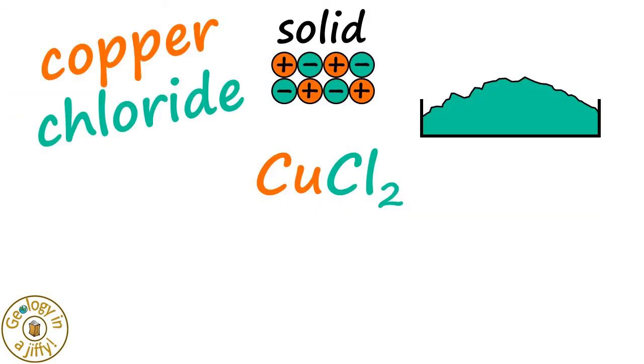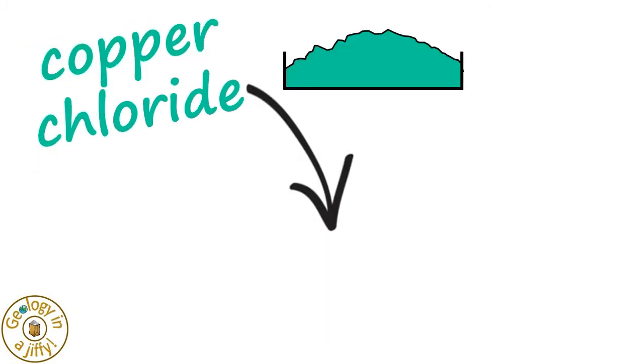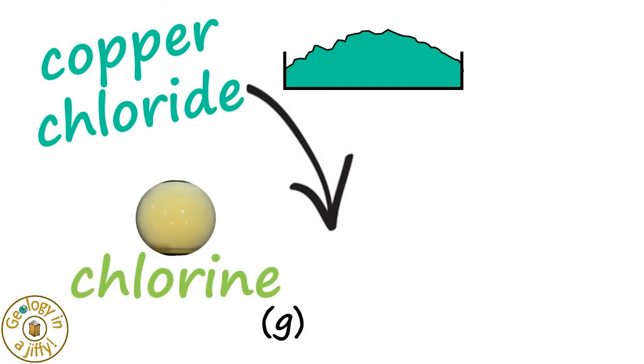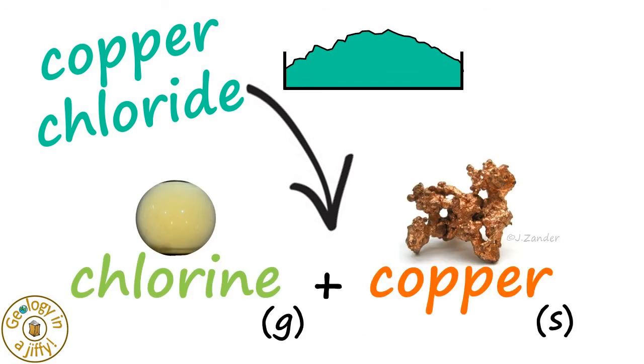In summary, from the ionic salt called copper chloride, by using electrolysis, we can extract two products: the non-metal chlorine in the form of a gas, and copper as a solid metal.